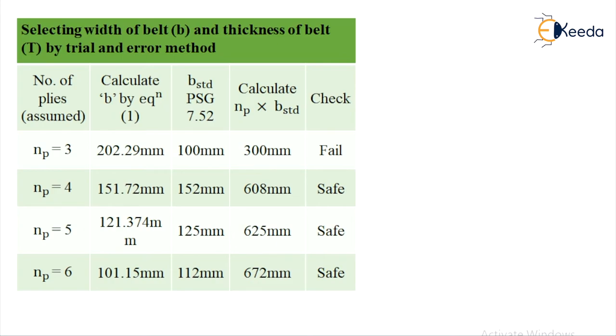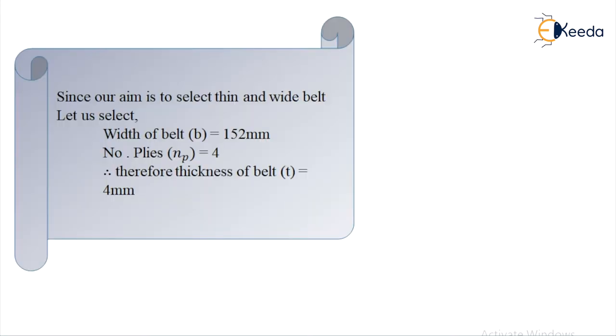Since our aim is to select thin and wide belt, let us select width of the belt B as 152 mm, number of plies are 4, therefore thickness of the belt is going to be 4 mm.